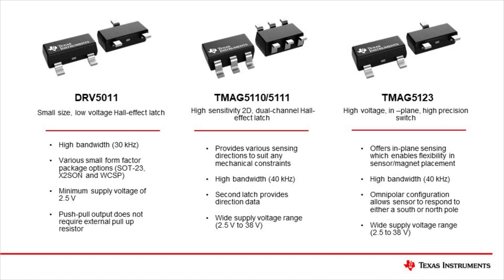The TMAG5110 and TMAG5111 provide two high bandwidth 40kHz Hall effect latches in one package, available in various sensing directions in order to provide design flexibility to suit any mechanical constraints in your system. One latch can be used to measure the flow rate while the second latch provides directional information enabling reverse flow detection. The TMAG5110 offers in-plane sensing to enable flexibility in sensor and magnet placement, providing a high bandwidth 40kHz output for high flow applications with an omnipolar configuration that allows the sensor to respond to either a south or north pole field, all while operating in a wide supply range from 2.5V to 38V.